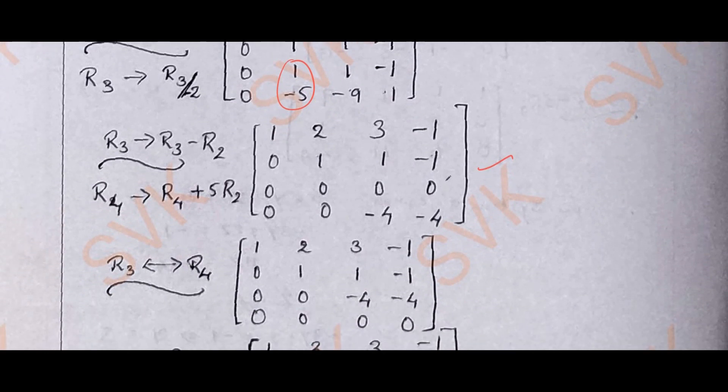Afterwards, as we observe that the third row is full of zeros, I am going to interchange with R4. R3 changes to R4, then we are going to get this matrix.